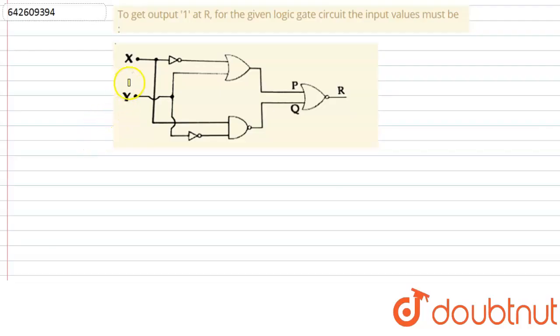Hello everyone, welcome to the video. So our today's question is to get the output 1 at R for the given logic gate circuit, the input values must be. In this question we have to find the value of x and y so that the value of R is equals to 1.